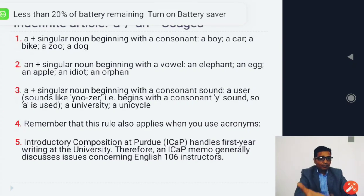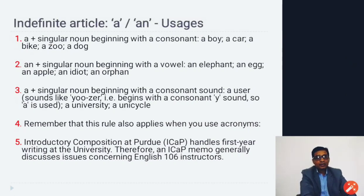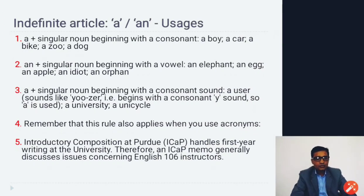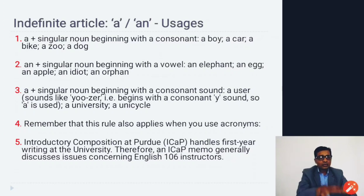There are situations where these rules don't function normally. For example, the word 'honest' — 'h' is a consonant, but we say 'an honest man' not 'a honest man', because 'h' is silent in this word. We pronounce it starting from 'o', and since 'o' is a vowel sound, we use 'an'. So we must keep certain exceptions in mind to use articles correctly.